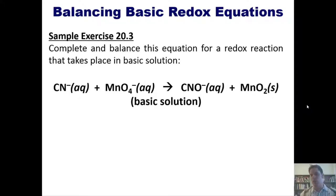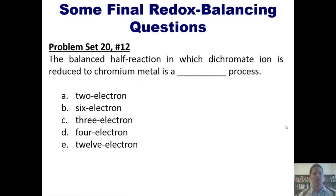Because the next slope questions I'm going to require you to do on your own, starting with this one: The balanced half-reaction in which the dichromate ion is reduced to chromium metal is a blank process. Okay, I guess that's pretty much it for now.